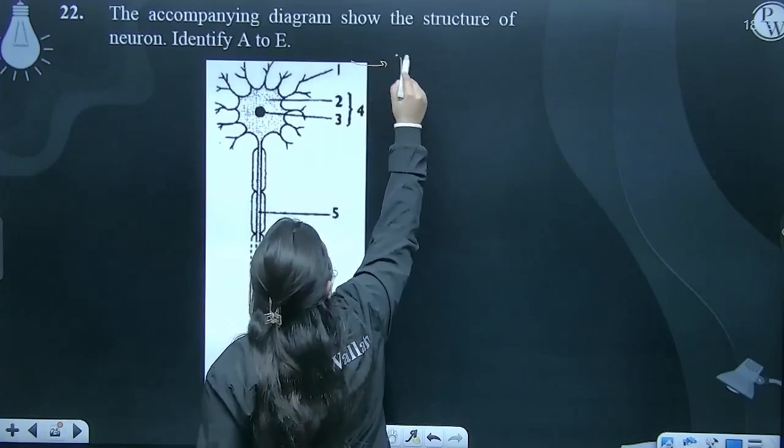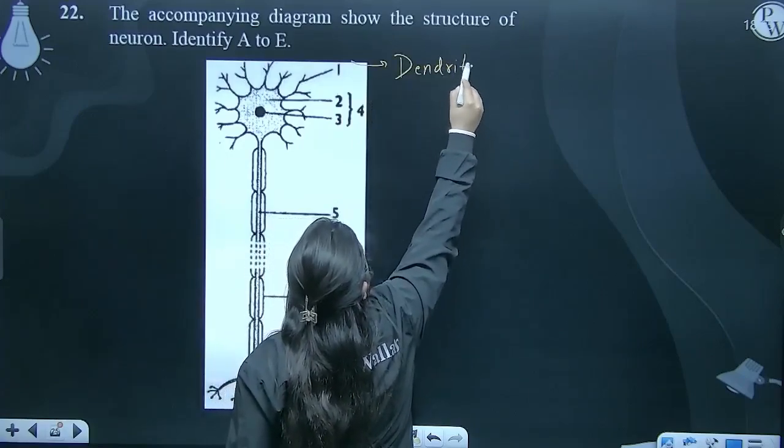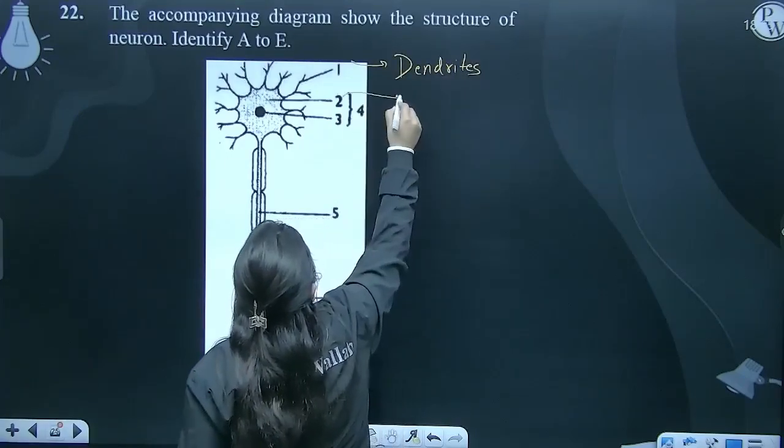We have already labeled it in the previous diagram. This is dendrite, okay? Number 2 is your Nissl body, Nissl granules.